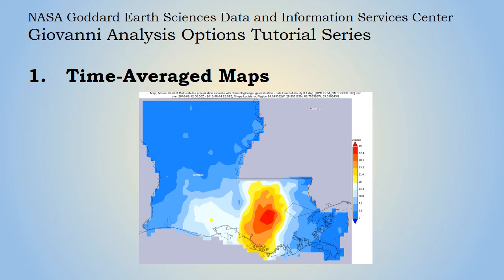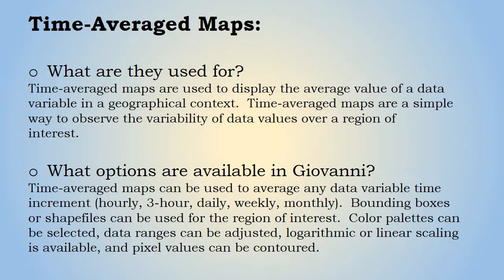This is the Giovanni Analysis Options tutorial number one on time average maps. Time average maps are the default visualization type in Giovanni, used to display the average value of a data variable in a geographical context. They are a simple way to observe the variability of data values over a region of interest.